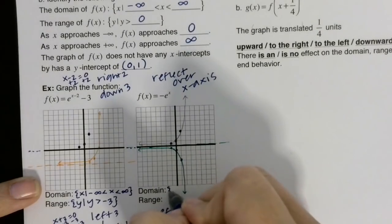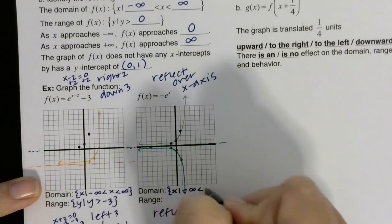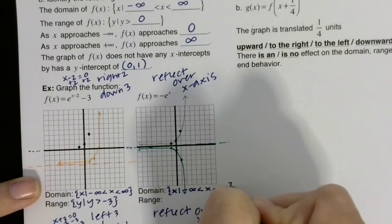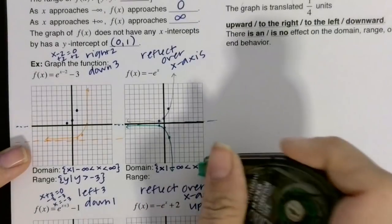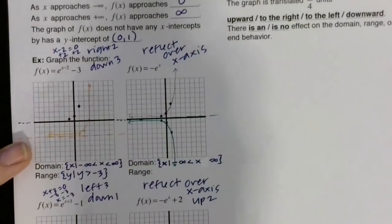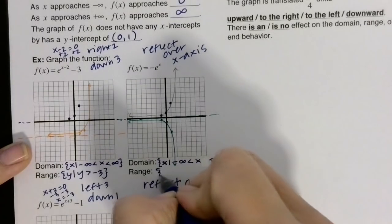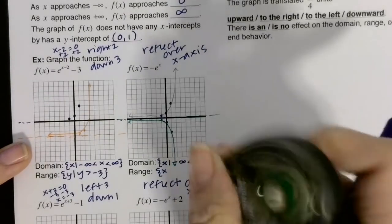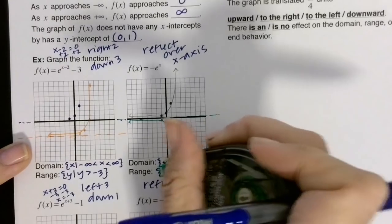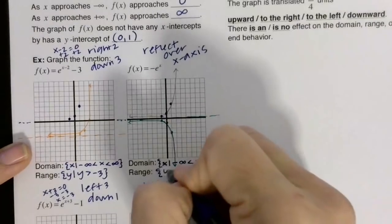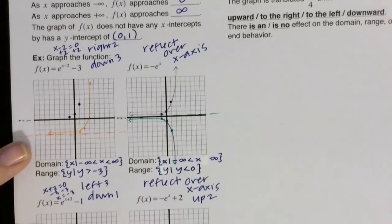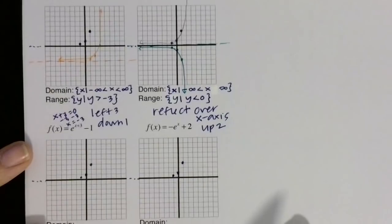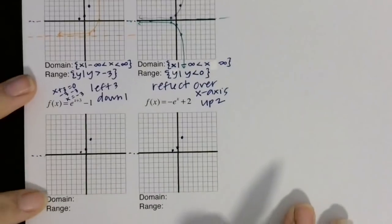Domain for that one, x such that negative infinity is less than x which is less than infinity. And then the range, this one's a little different because of the reflection. We're going to have y such that y is less than 0. So that negative switches the sign from greater than to less than.